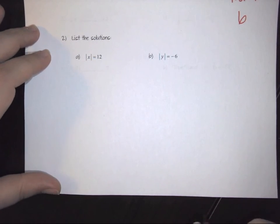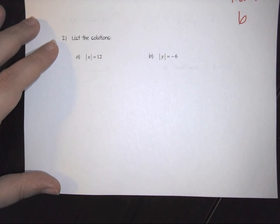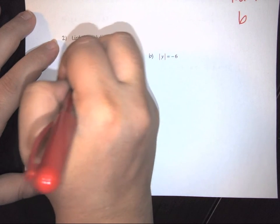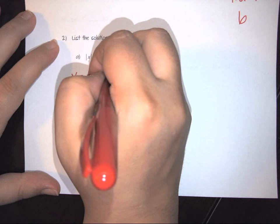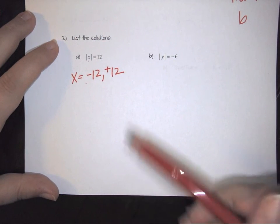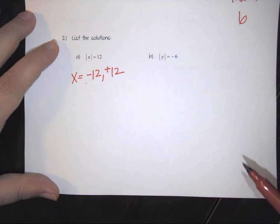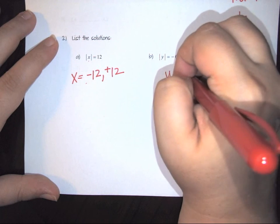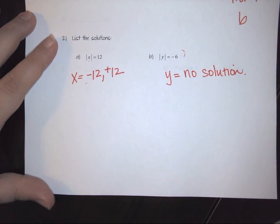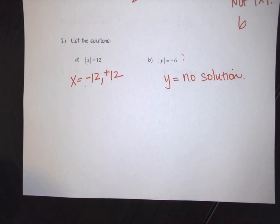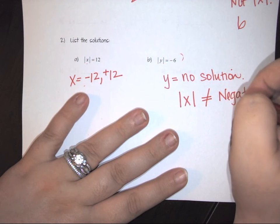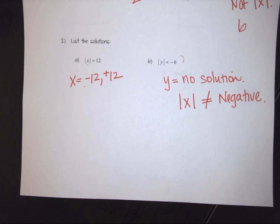Listing solutions to an absolute value equation is a different matter. For the absolute value of x equals 12, you need to account for both positive and negative: x would have to be negative 12 or positive 12 — two solutions. However, for the absolute value of x equals negative 6, there is no solution, because by the definition of absolute value, the result cannot be negative. If it equals a negative, you have violated the absolute value rule.